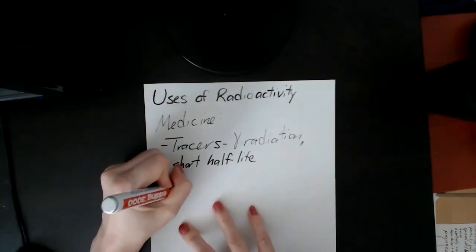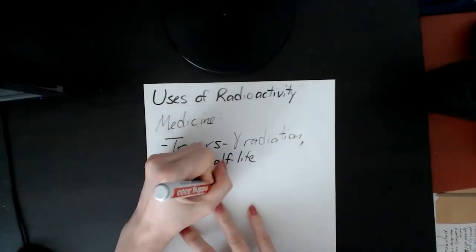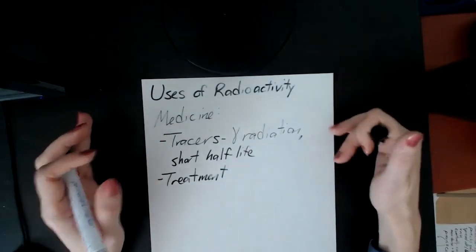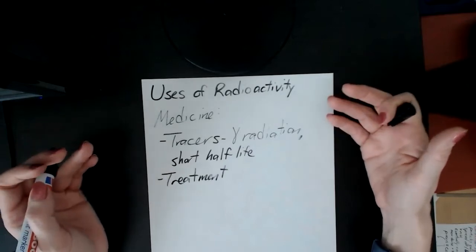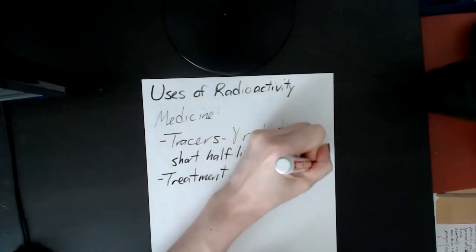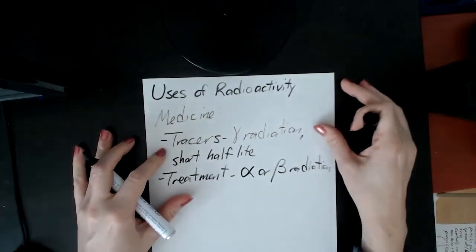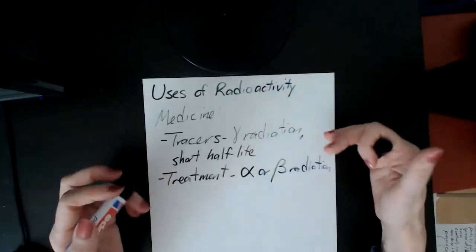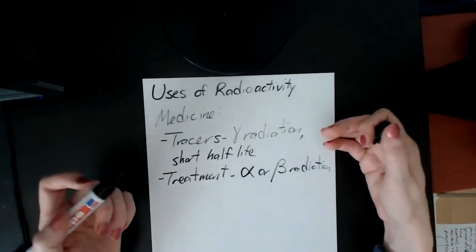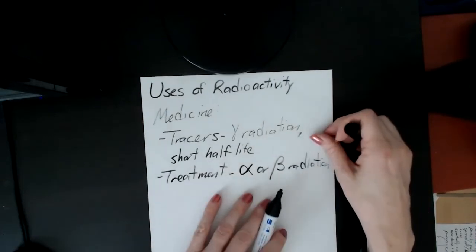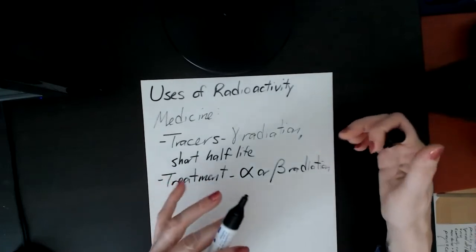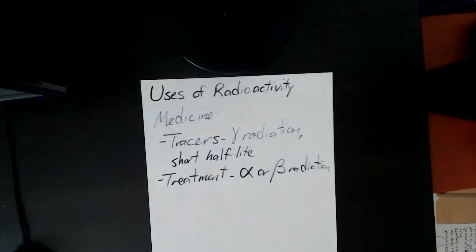It can also be used as a treatment. And by a treatment, the idea is we've talked about this, but the idea of radiating cancerous cells. If you expose the cell to too much radiation, then the DNA will mutate to such a degree that it won't be able to copy itself. And this is usually alpha or beta radiation because you don't want the gamma throughout the whole body. Again, you want to be able to target it. So for example, if I have cancer in my thyroid, then usually they use a beta radiation, a radioactive isotope that emits beta particles so that you don't expose your entire body to the radiation.